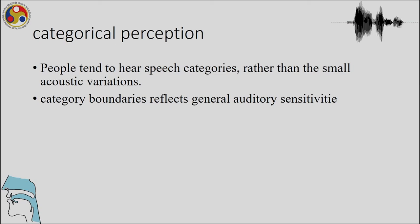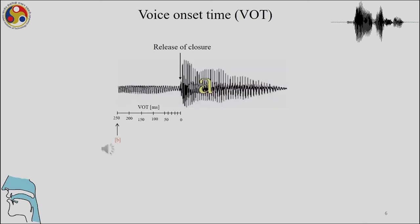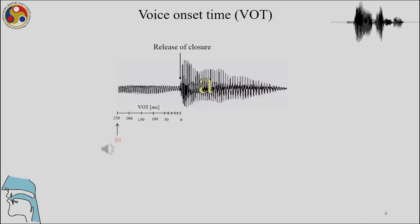We also discussed categorical perception — people hear speech categories rather than small acoustic variations. Category boundaries therefore reflect general auditory sensitivities. We also looked at voice onset time, which is one of the most important things you would study when studying categorical perception.